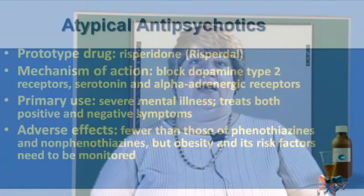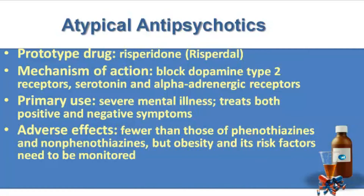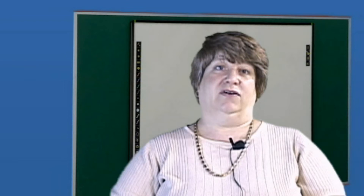With our atypical antipsychotics, our prototype drug is Risperdal. The mechanism of action is to block the dopamine type 2 receptors, as well as serotonin and the alpha-adrenergic receptors. It is primarily used for severe mental illness and treats both the positive and the negative symptoms. Adverse effects are fewer than those of phenothiazines and non-phenothiazines, but obesity and its risk factors need to be monitored.